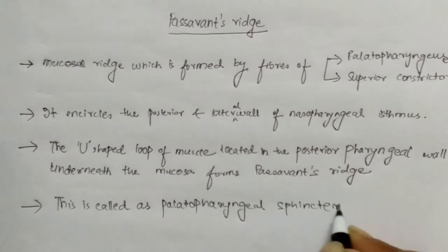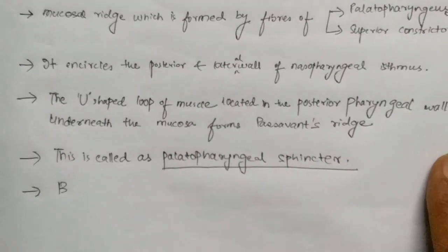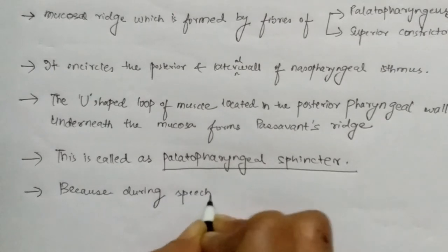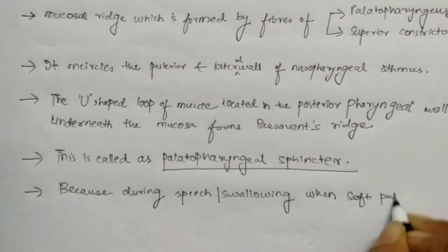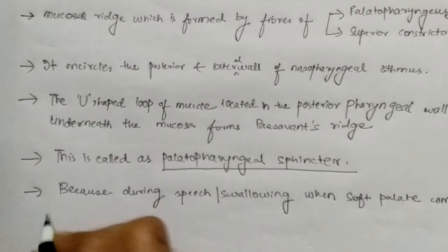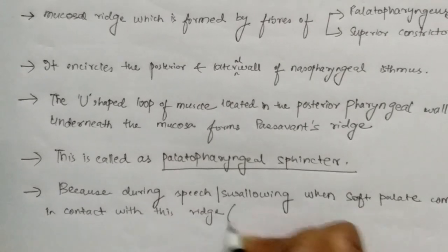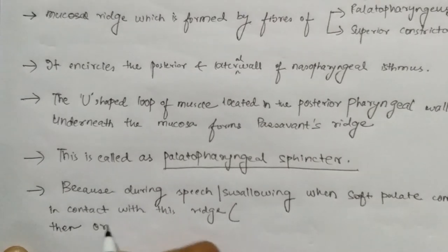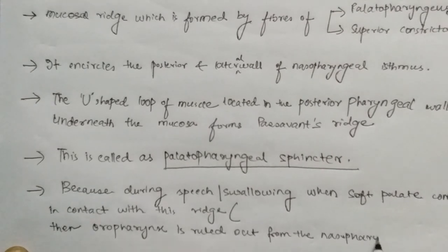The question arises: why is this ridge called the palatopharyngeal sphincter? Because during speech or swallowing, when the soft palate comes in contact with this ridge, the oropharynx is isolated from the nasopharynx — that means the communication between the nasopharynx and oropharynx is lost.